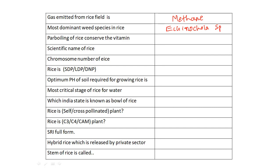Par-boiling of rice conserves vitamin B. There are two types of rice — Asian rice and African rice. The scientific name of rice is Oryza sativa. The chromosome number of rice is 2n = 24.